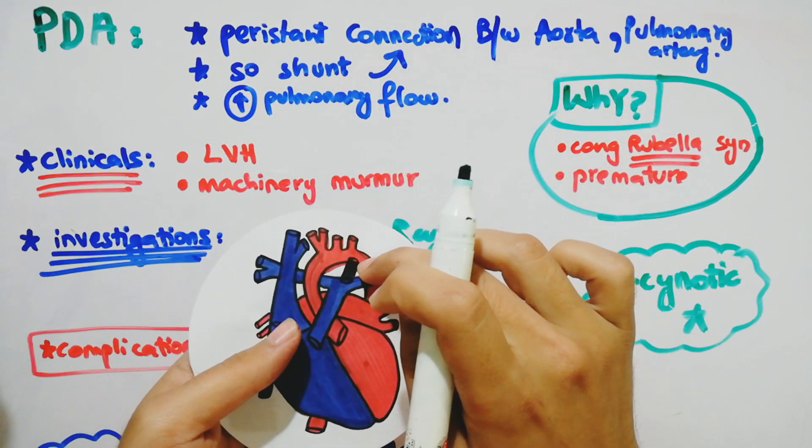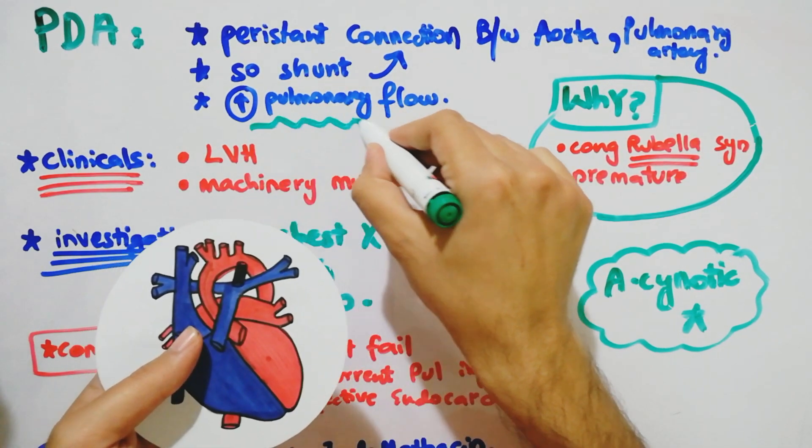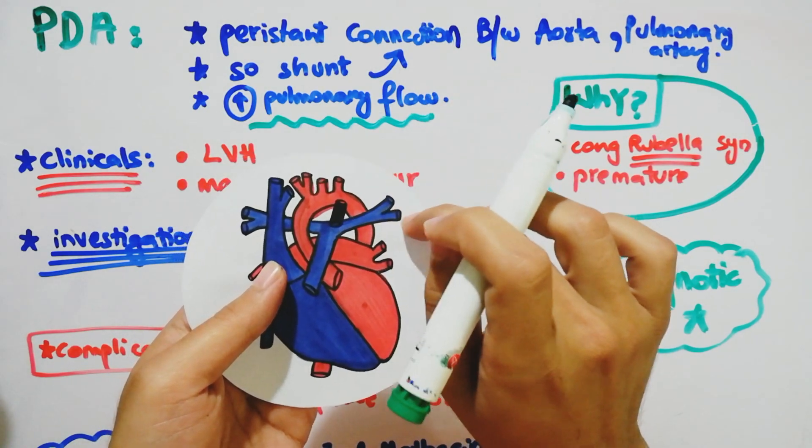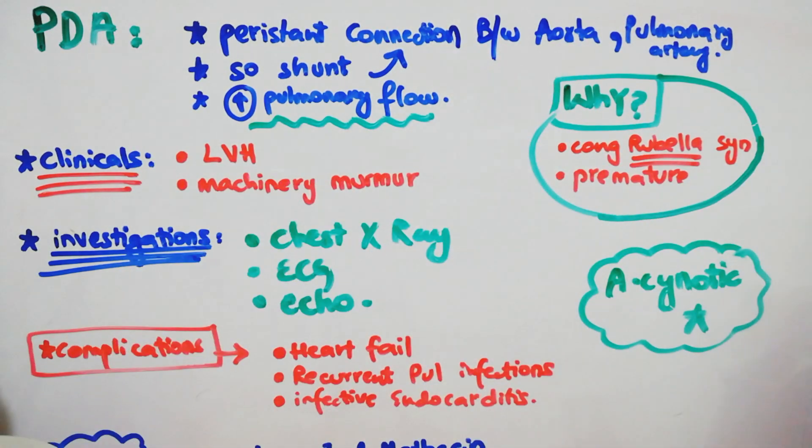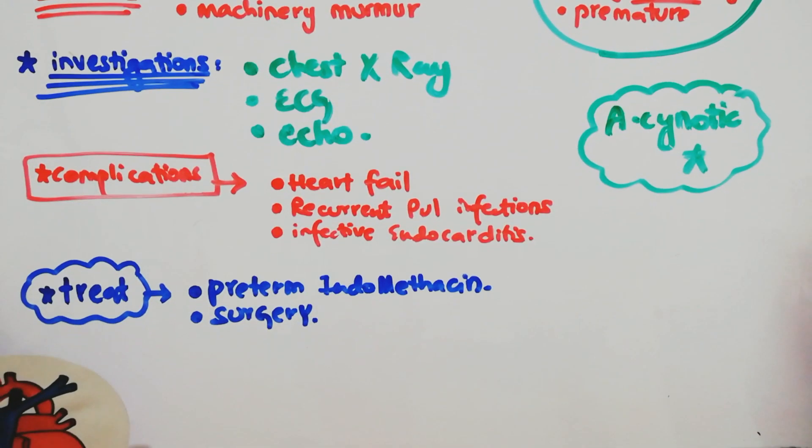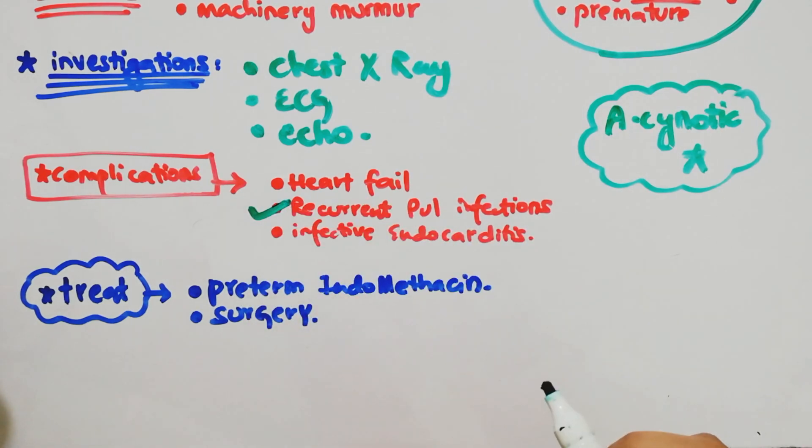So what will happen here? Shunting will be from high pressure to low pressure. This causes increased pulmonary flow. The pulmonary vessels will get more blood, so the lungs will get more perfusion. This leads to recurrent pulmonary infections.